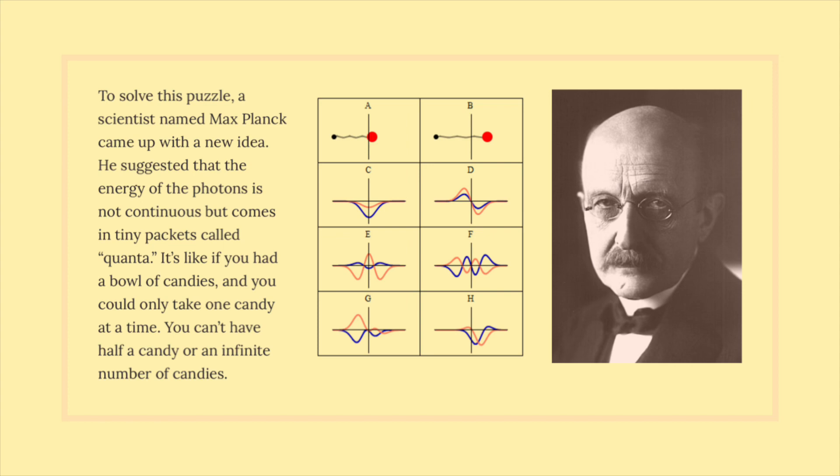To solve this puzzle, a scientist named Max Planck came up with a new idea. He suggested that the energy of the photons is not continuous but comes in tiny packets called quanta. It's like if you had a bowl of candies, and you could only take one candy at a time. You can't have half a candy or an infinite number of candies.